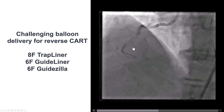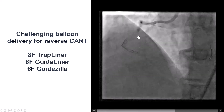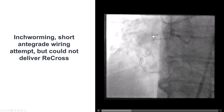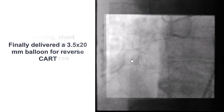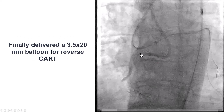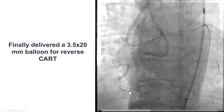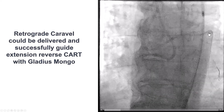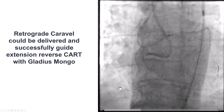However, because of the severe calcification, tortuosity, and severe lesion, we had a lot of difficulty. We tried several guide extensions, several balloons, and the inch-worming technique, which is very important for delivering guide extensions. But eventually, after multiple attempts, we were able to deliver a 3.5 by 20 mm balloon all the way onto the distal right coronary artery. We then changed to a thinner microcatheter — the Caravel — hoping to avoid the ischemia we had before, and brought it all the way to the distal cap.